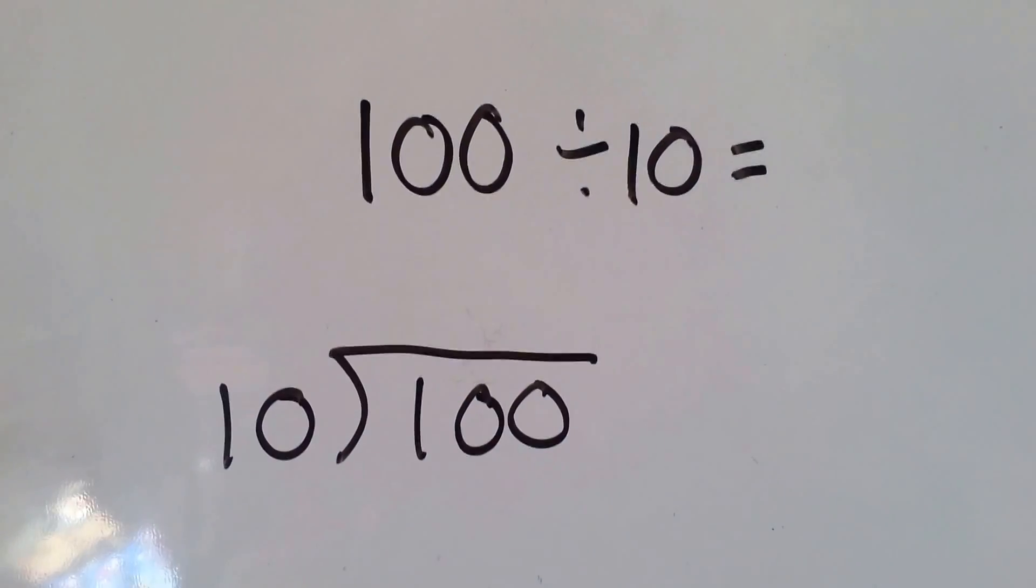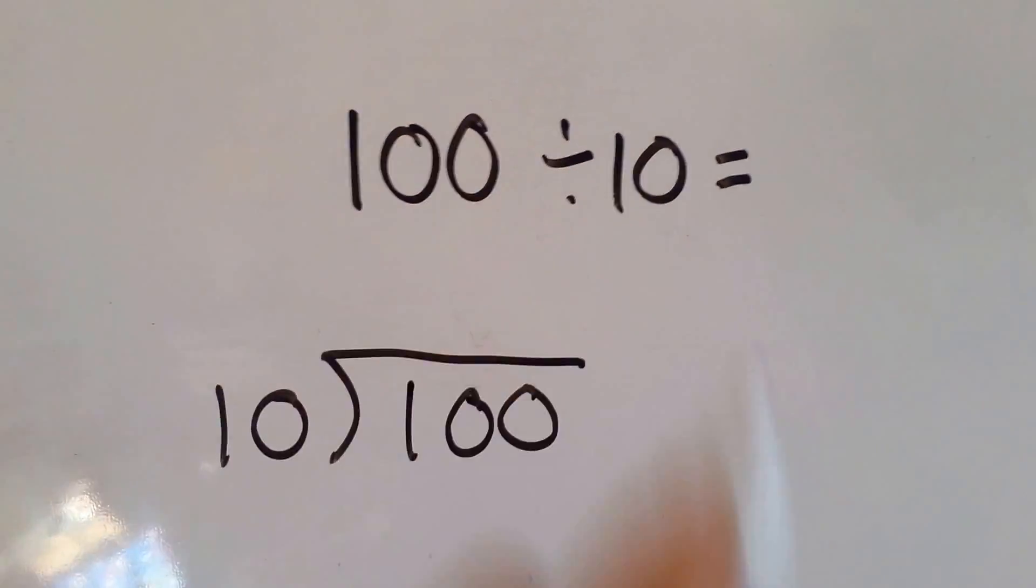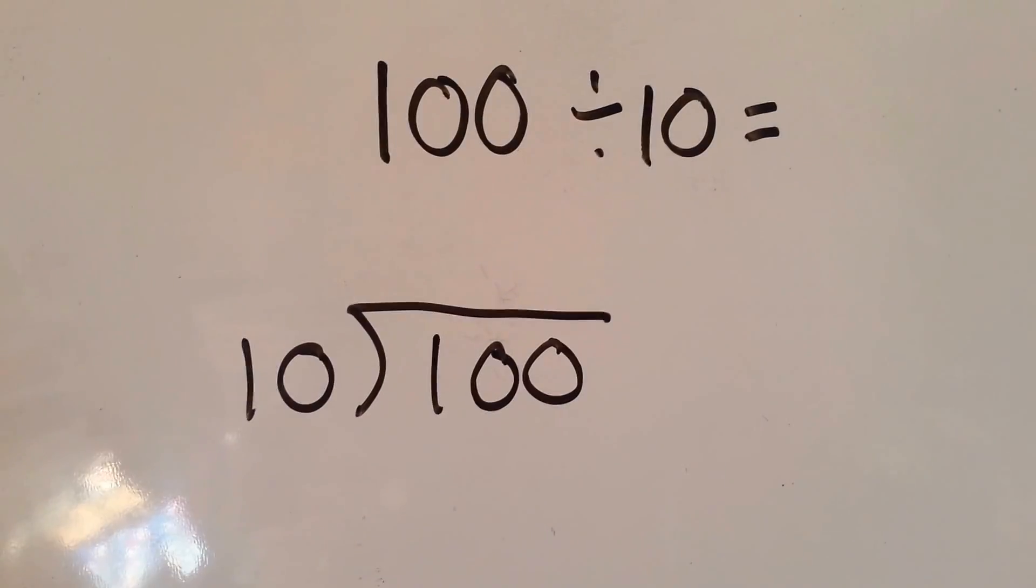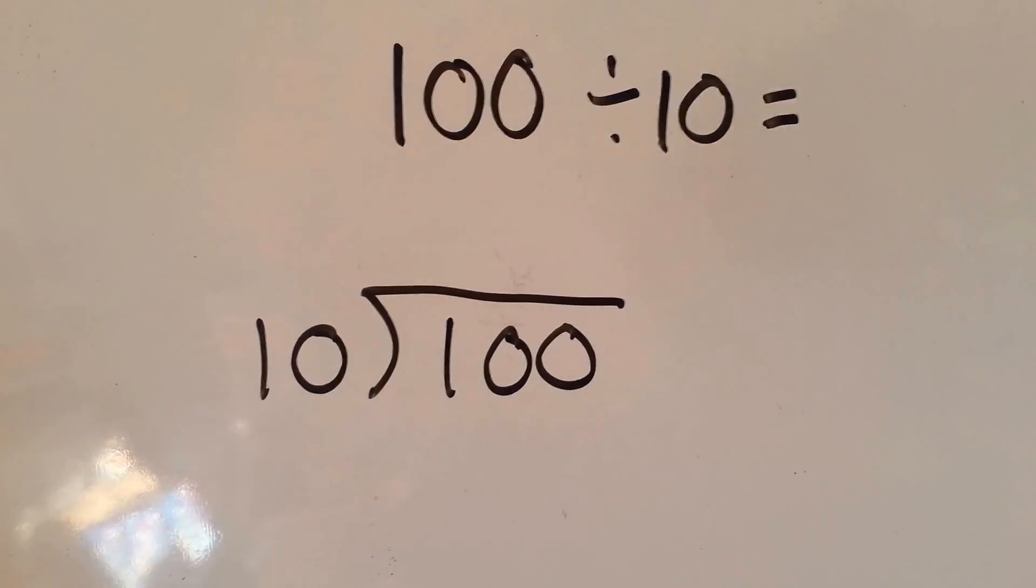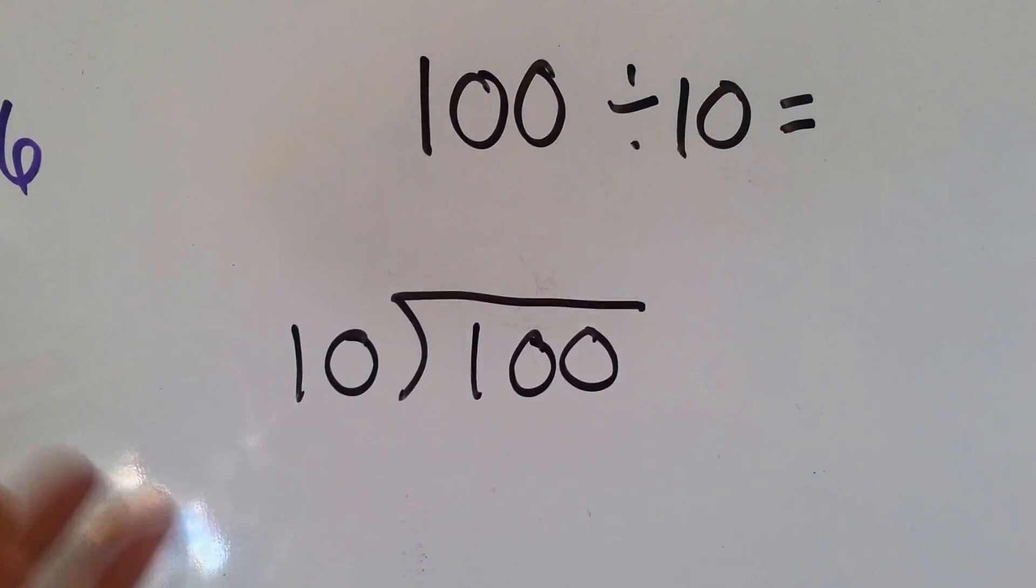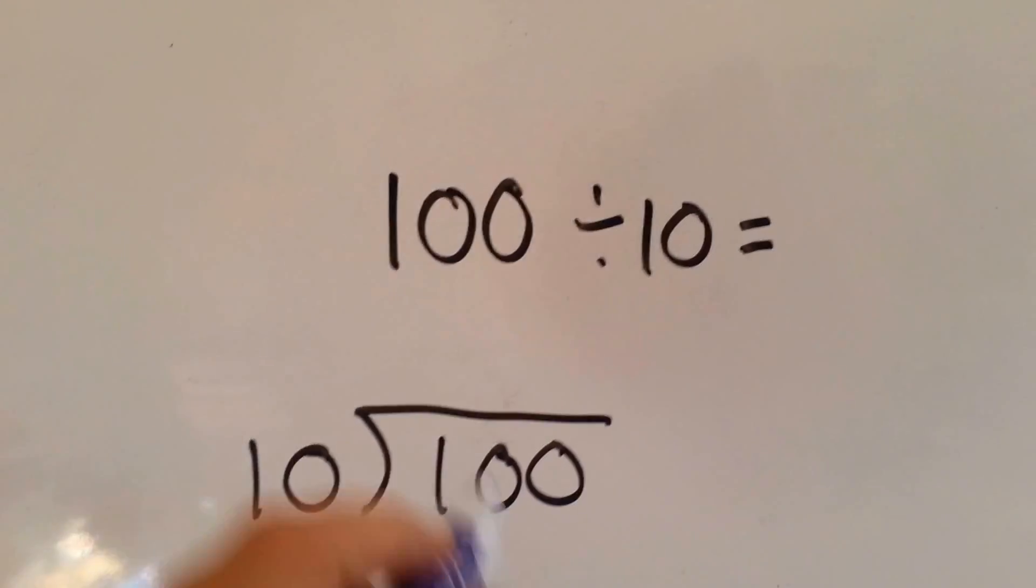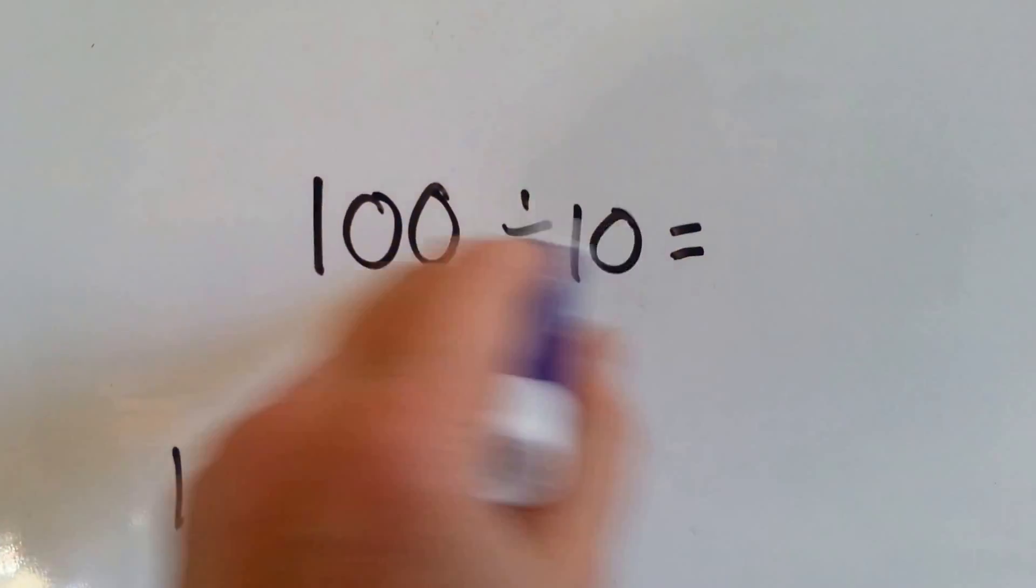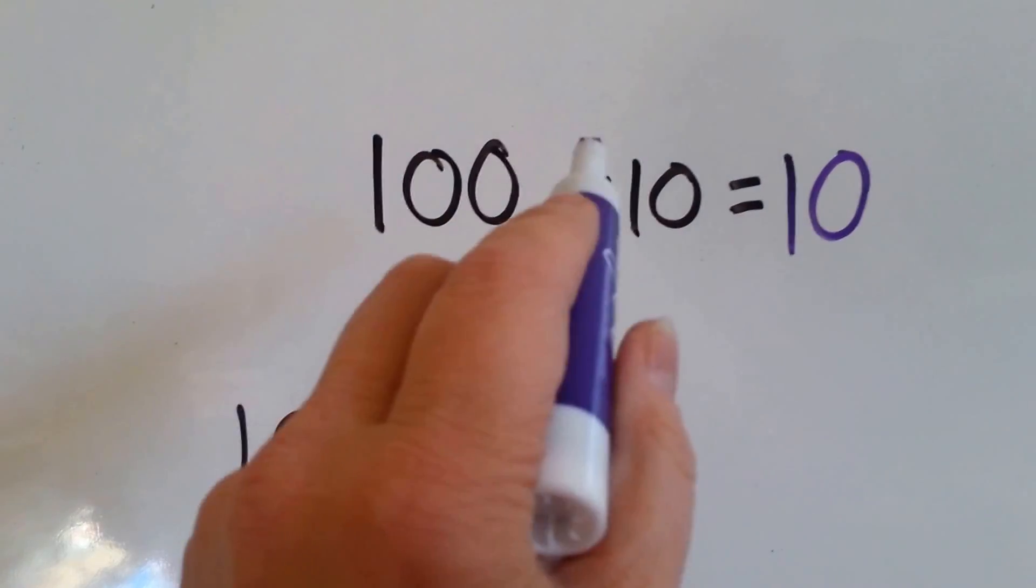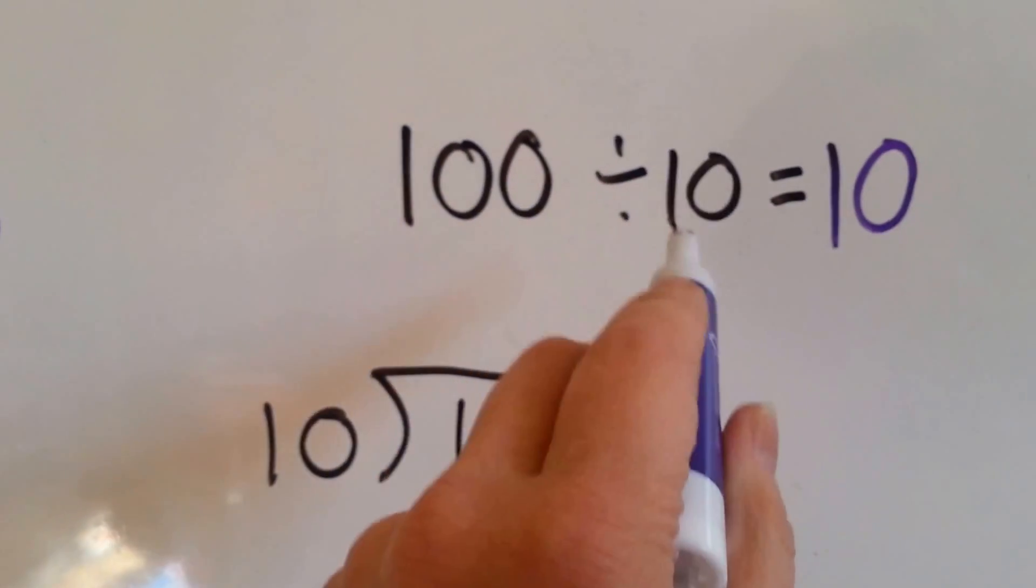Look at this one. 100 divided by 10. How many times can 10 fit into 100? Do you know how to count by 10s and get to 100? 10, 20, 30, 40, 50, 60, 70, 80, 90, 100. It took 10 fingers. So 100 divided by 10 is 10. 100 divided by 10 is 10 because 10 times 10 is 100.